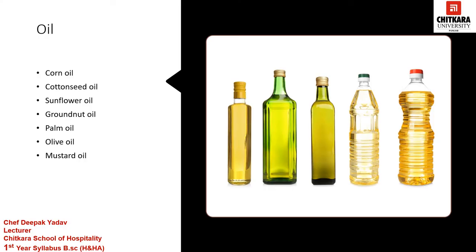Now we will discuss about vegetable oils. These oils are also a kind of fat. The first vegetable oil is corn oil. It is made from corn or maize and has a smoke point of 230 degrees Celsius and is more suitable for deep frying. The other one is cottonseed oil, which is commonly used in cooking and also has a very high smoking point like corn oil.